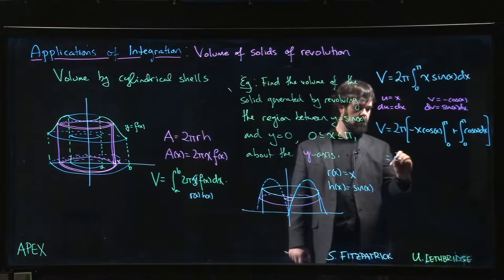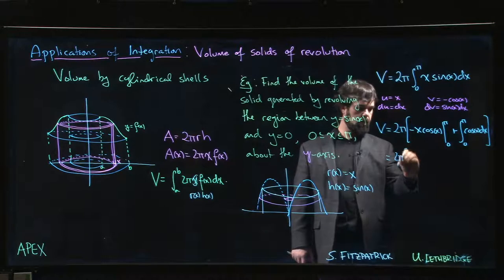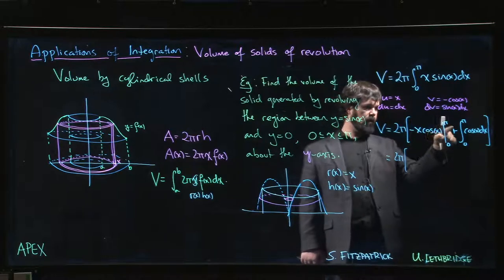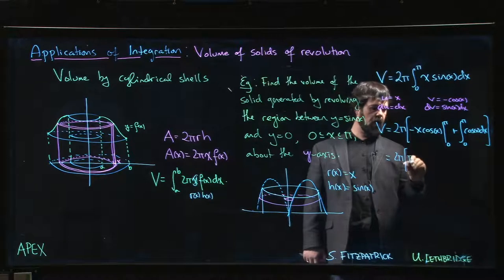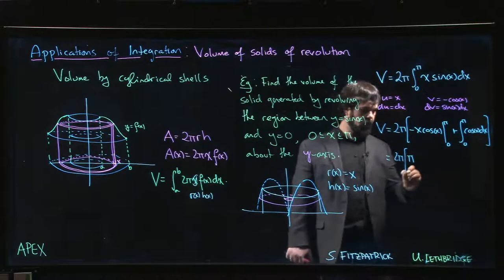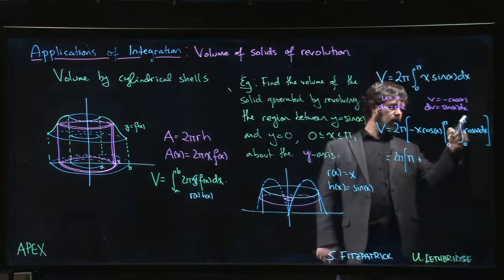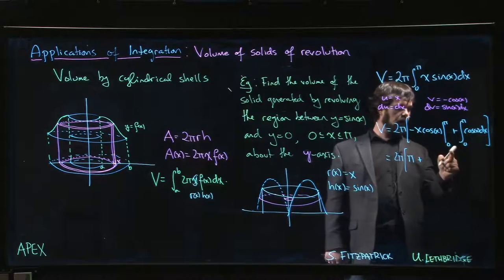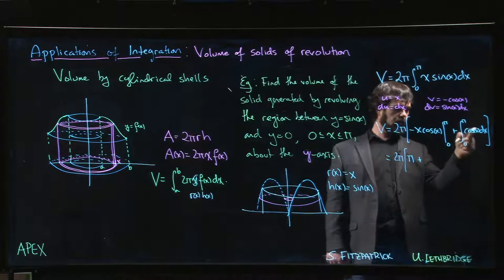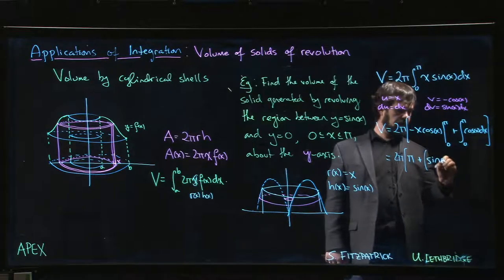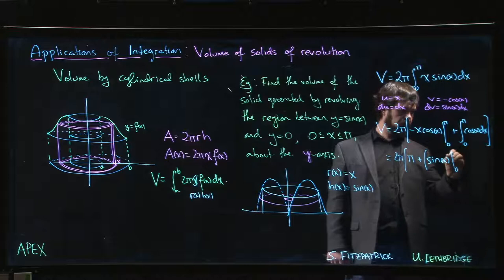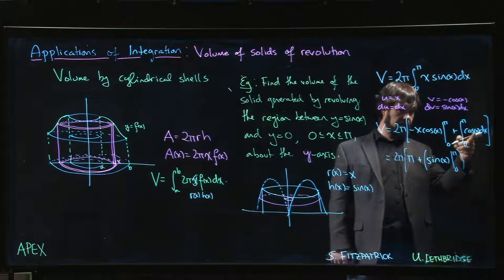So we get 2 pi times, when we put in the upper limit, we're going to get minus pi times minus 1, we get pi minus 0, so we get pi, plus we've integrated this to sine of x from 0 to pi. Don't forget the antiderivative.